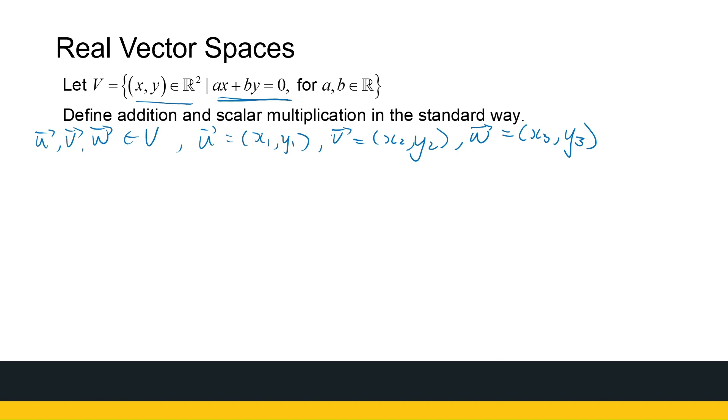And then we know from here that for any a and b, ax1 plus by1 gives me zero, ax2 plus by2 will give me zero, and ax3 plus by3 will give me zero for a and b real numbers. All right, so that is what my elements of the set look like.